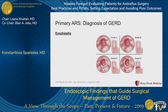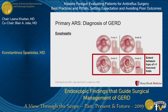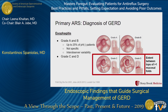When we evaluate someone and we see findings of esophagitis, the most common grading score that we use is the Los Angeles classification. It goes from grade A through grade D. The important part is to differentiate grade C and D from grade A and B, depending on the extent of the mucosal breaks between the tops of at least two mucosal folds.